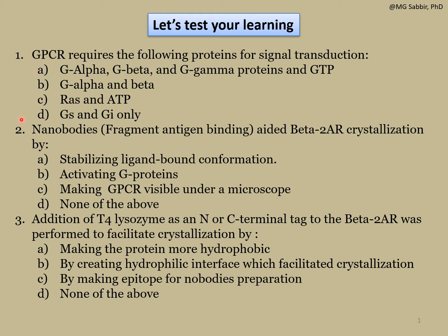Question number two: nanobodies or fragment antigen-binding aided beta-2 adrenergic receptor crystallization by — option A: stabilizing ligand-bound conformation; option B: activating G proteins; option C: making GPCR visible under a microscope; option D: none of them. Option C is not correct because nanobodies bound to the GPCR still cannot be seen under a microscope as it is not within the microscopic resolution range.